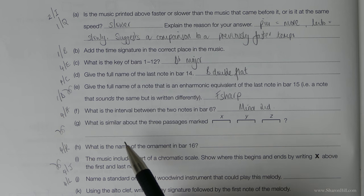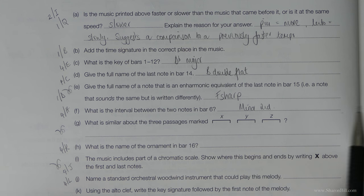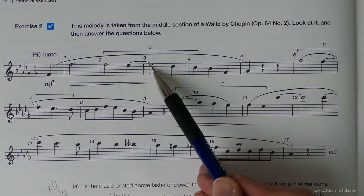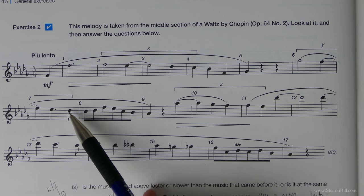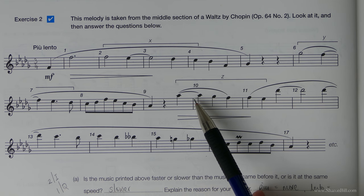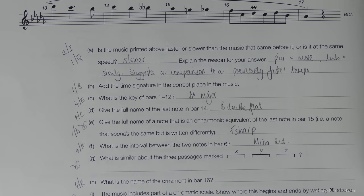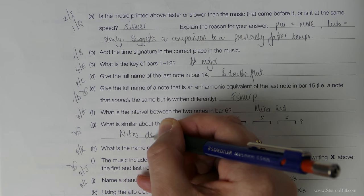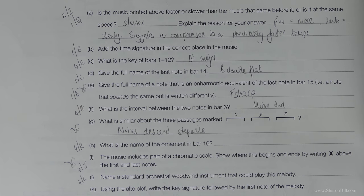Okay, so a little bit of observation now is required. What's similar about the three passages marked X, Y and Z that are bracketed? So let's just have a little look. So we've got a tie over the bar, everything's going down in step. Tie over the bar, everything's going down in step. But the timing changes a little bit at the end here. Tied over the bar again. Everything goes down in step. The phrasing's different, but the one common denominator really is that everything descends stepwise. So we just need to say, notes descend stepwise. Just a general observation. No need to get too bogged down in minute detail there.